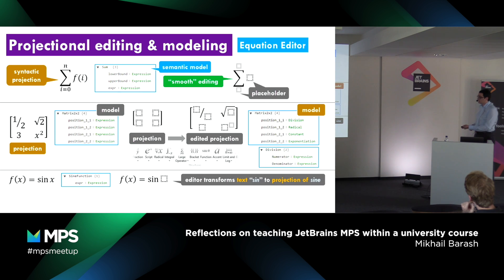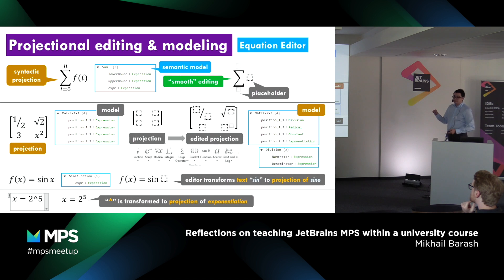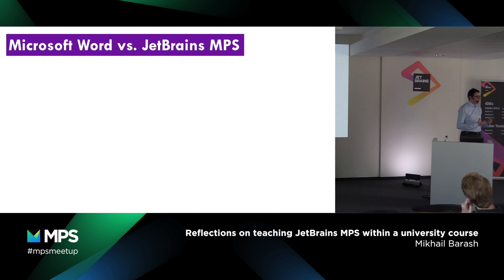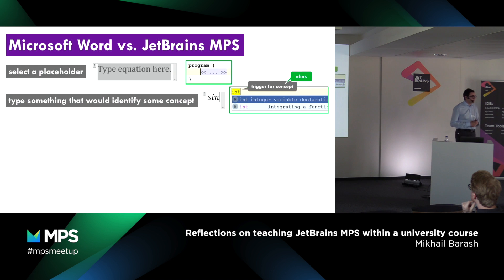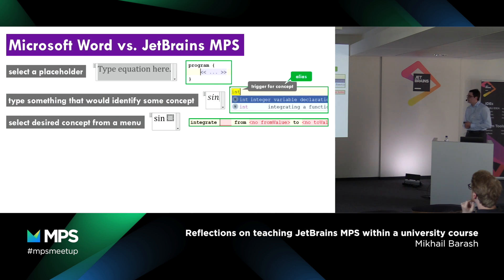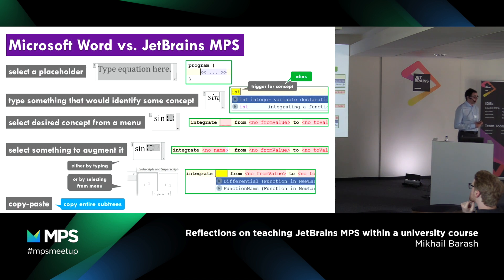Thinking about typing in Microsoft Word Equation Editor: when we type SIN and press the space bar, we get the projection of the sine function — the same as MPS with aliases. Another example: typing a circumflex and 5 then space bar gives the projection of exponentiation. Is Microsoft Word really that close to JetBrains MPS? In both, we start by selecting a placeholder, type something to identify a concept, select the desired concept from a menu, optionally augment the chosen concept, and can copy and paste an entire subtree.